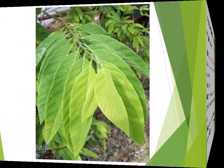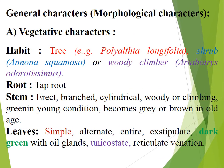General morphological characters — let us study one by one. Vegetative characters: Habit — tree, for example Polyalthia longifolia; shrub — Annona squamosa; or woody climber — Artabotrys odoratissimus. Root — taproot. Stem — erect, branched, cylindrical, woody or climbing, green in young condition, becoming gray or brown in old age. Leaves — simple, alternate, entire, exstipulate, dark green with oil glands, unicostate reticulate venation.